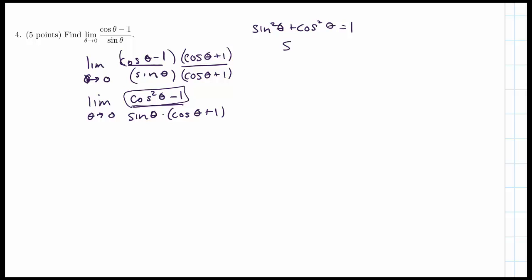So if I take this one over to the other side, cosine squared minus one, and I'll take this sine to the other side, sine squared on the other side. This is equivalent to sine squared, or sorry, negative sine squared.